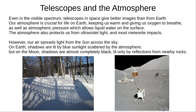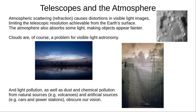Even in the visible spectrum, space telescopes give better images than telescopes on the ground. Our atmosphere is great — it keeps us warm, it gives us oxygen to breathe, its pressure allows liquid water on the surface, and it shields us from harmful ultraviolet radiation and meteorite impacts. However, it spreads light across the sky. Compare these earthly shadows, lit by blue light scattered across the sky, with the almost completely black shadows on the moon. So atmospheric scattering, or refraction, distorts visible light, limiting the resolution achievable by Earth-based telescopes.